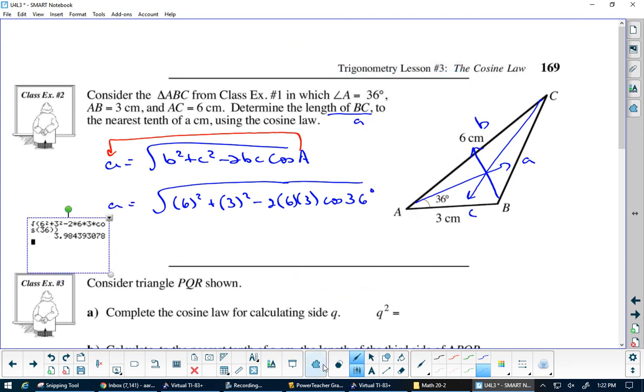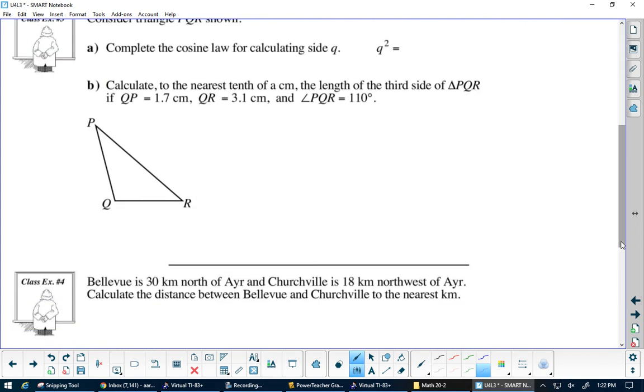We would say a equals 4.0 centimeters. Now what are we going to do if they have q's, r's, and p's? Same thing, right? They tell us QP is 1.7, QR is 3.1—doesn't the 3.1 look shorter than the 1.7? Obviously not to scale—and angle PQR is 110 degrees.